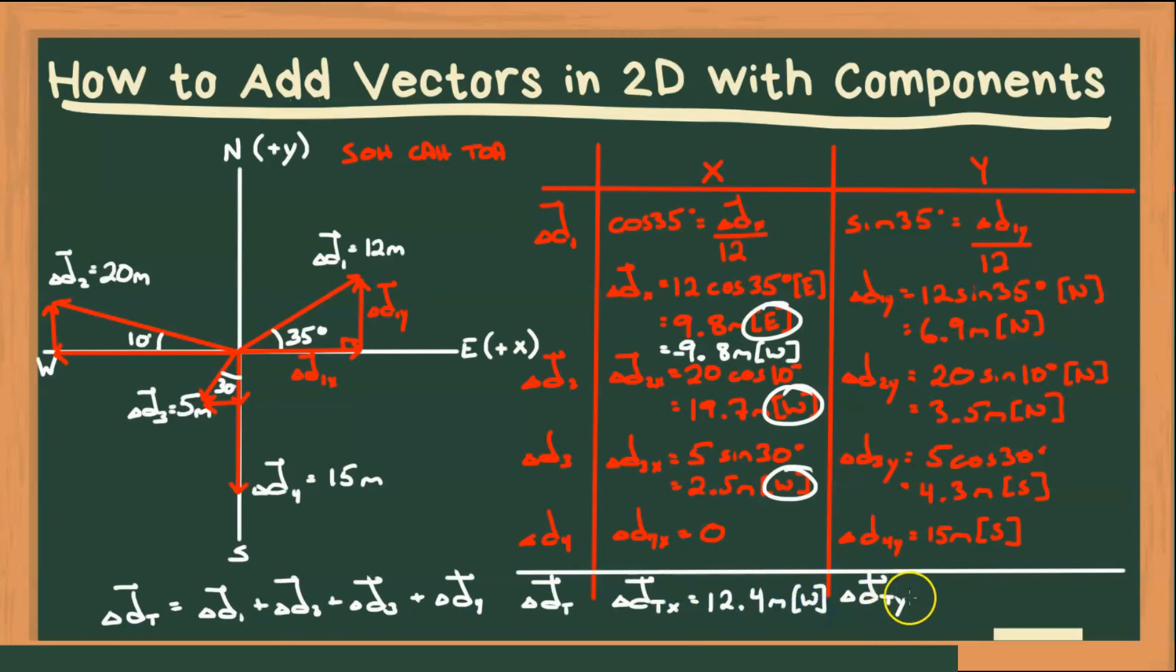Next, we're going to do the same thing in our Y. So notice we have north, north, south, south. So what I'm going to do, and it doesn't matter which one you do it with, but it looks like south has greater value. So I'm going to change this to minus 6.9 meters south. And this one I'm going to change to minus 3.5 meters south. Multiplying by a negative takes the opposite direction.